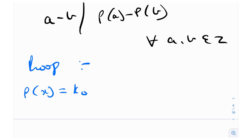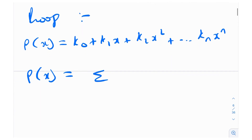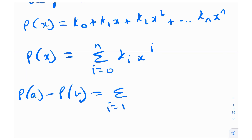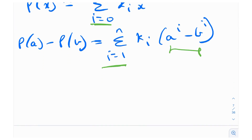For the proof, let the polynomial be p(x) = k₀ + k₁x + k₂x² + ... + kₙxⁿ, or using sigma notation: p(x) = Σᵢ₌₀ⁿ kᵢxⁱ. Now, p(a) − p(b) equals the summation from i = 1 to n of kᵢ(aⁱ − bⁱ). The index starts at i = 1 because i = 0 corresponds to the constant term, which cancels: a⁰ − b⁰ = 1 − 1 = 0.